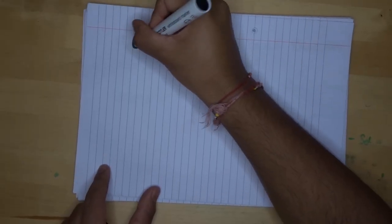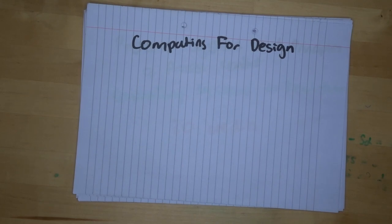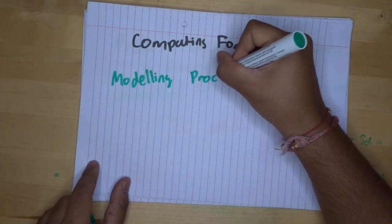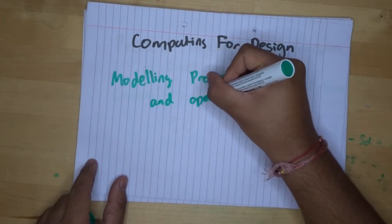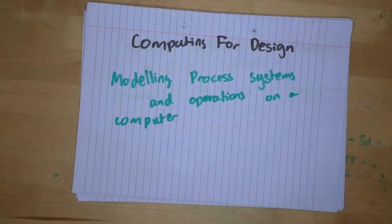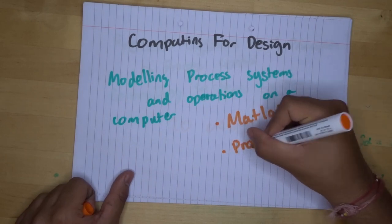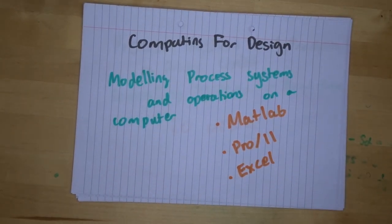This next module is computing for design. In computing for design, you learn how to model process systems on a computer. You can use software such as MATLAB, Pro2, and Excel to model these systems. And it is designed because some of the problems that you do, say, in introduction to transport phenomena or mass heat and momentum transport cannot be done by hand and requires a computer to solve these problems.